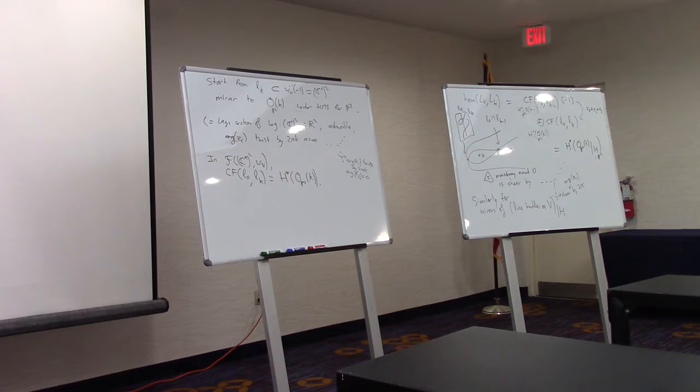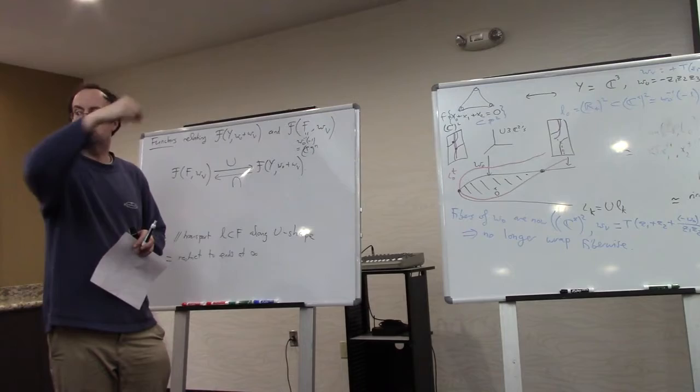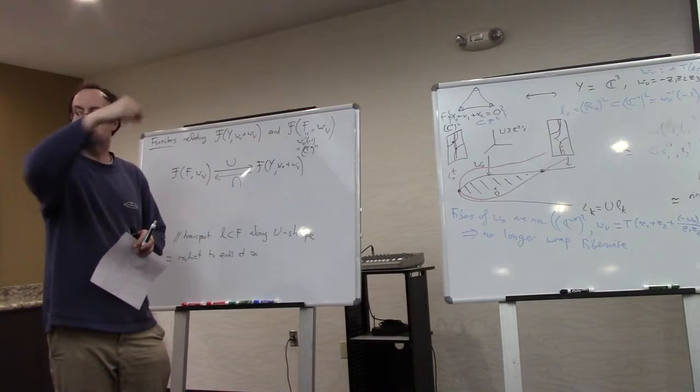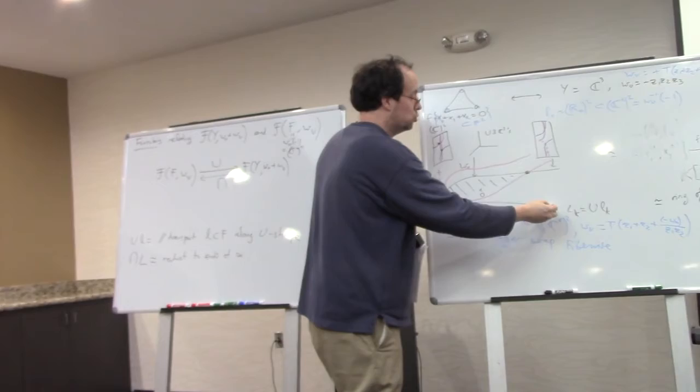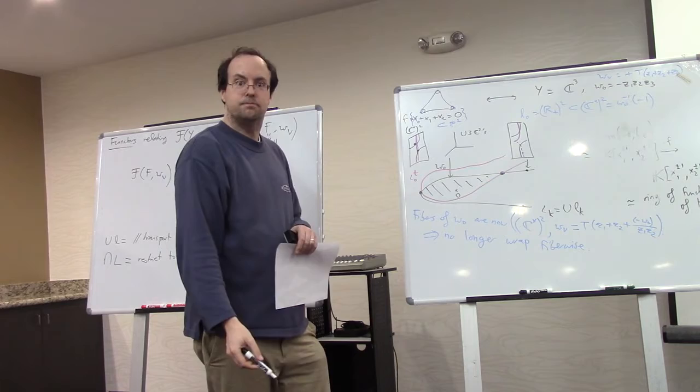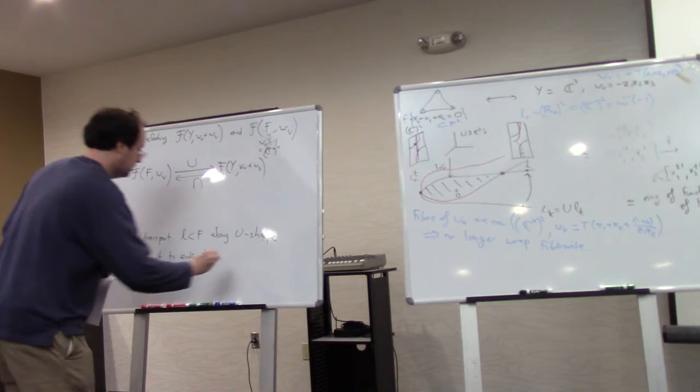which has its origins, I think, in the history of this kind of thing. So this is sometimes called the cup functor. So what this one does is just parallel transport the Lagrangian from the fiber along the U shape. It's the one we've already encountered. Then there's a functor in the opposite direction, which would be called cap, similarly. Cap L looks at the ends at infinity.